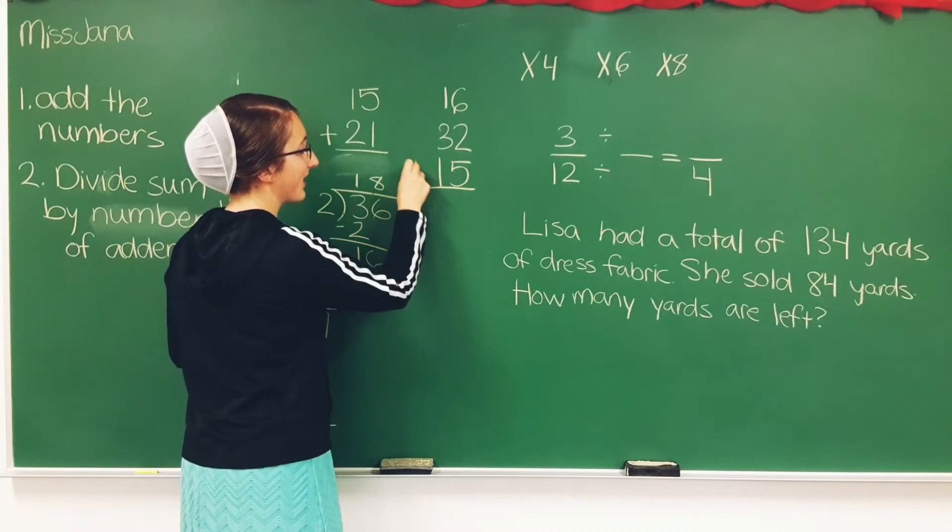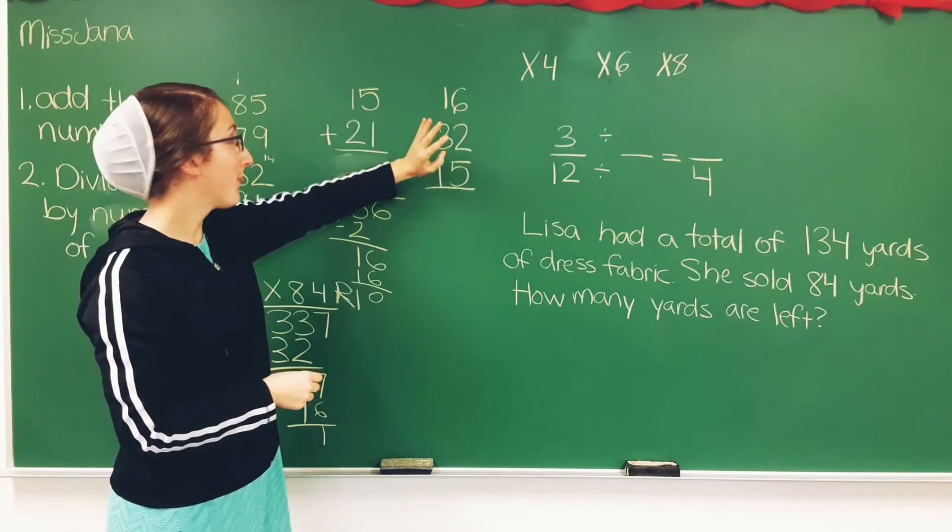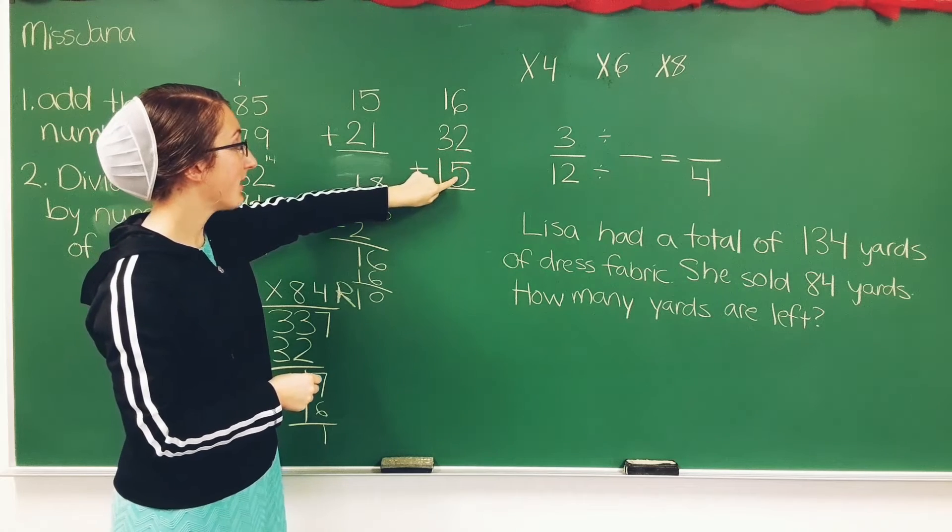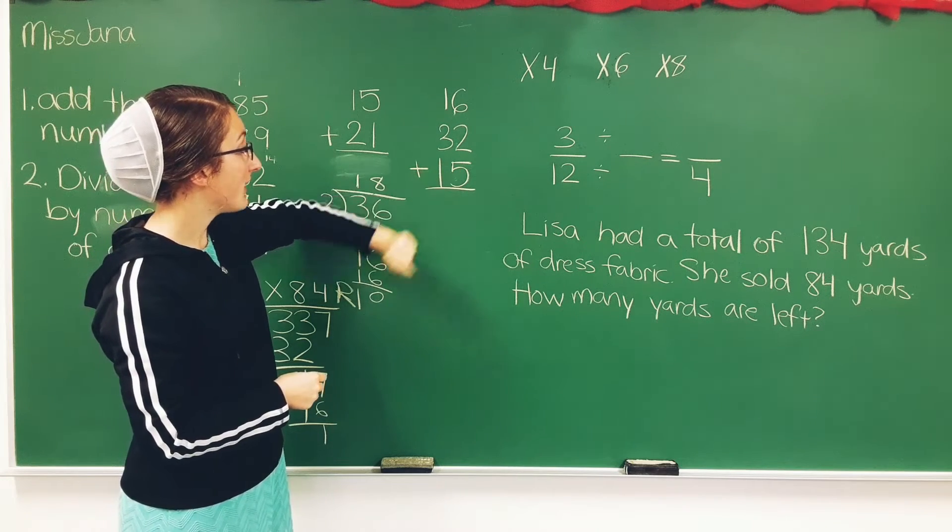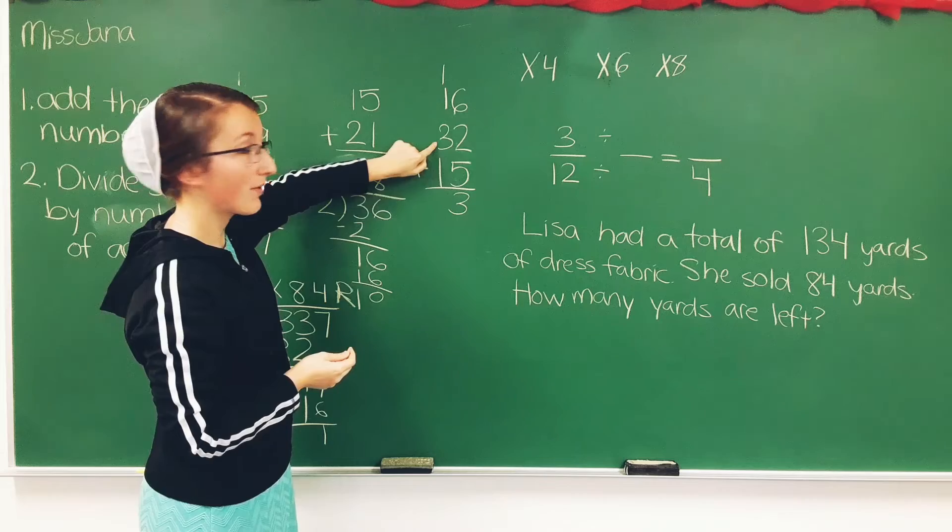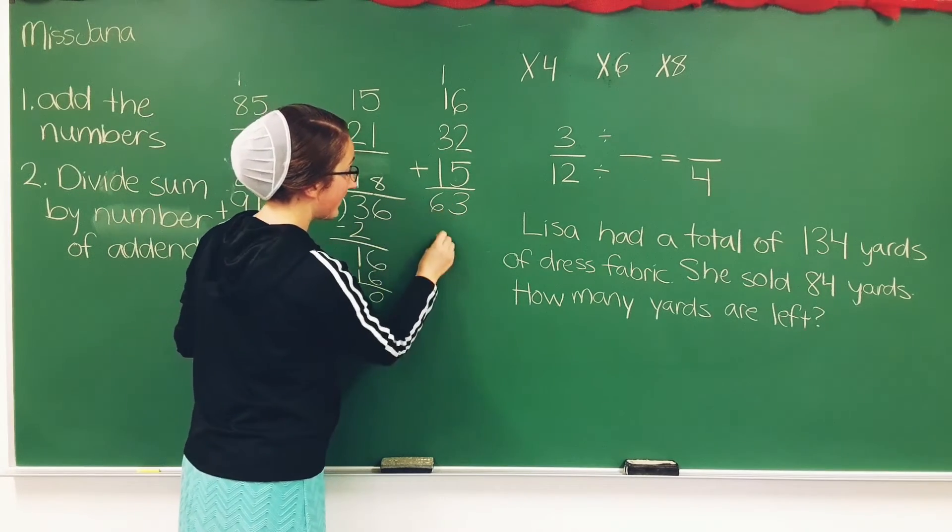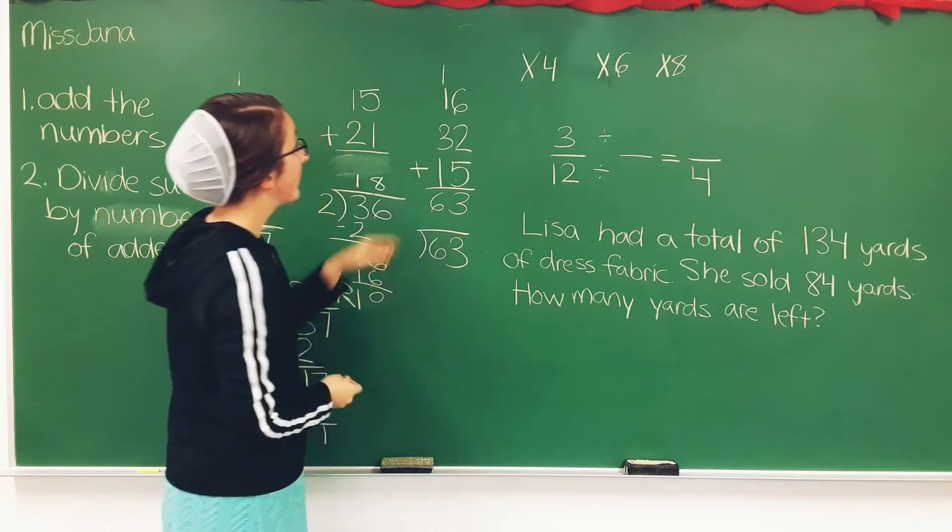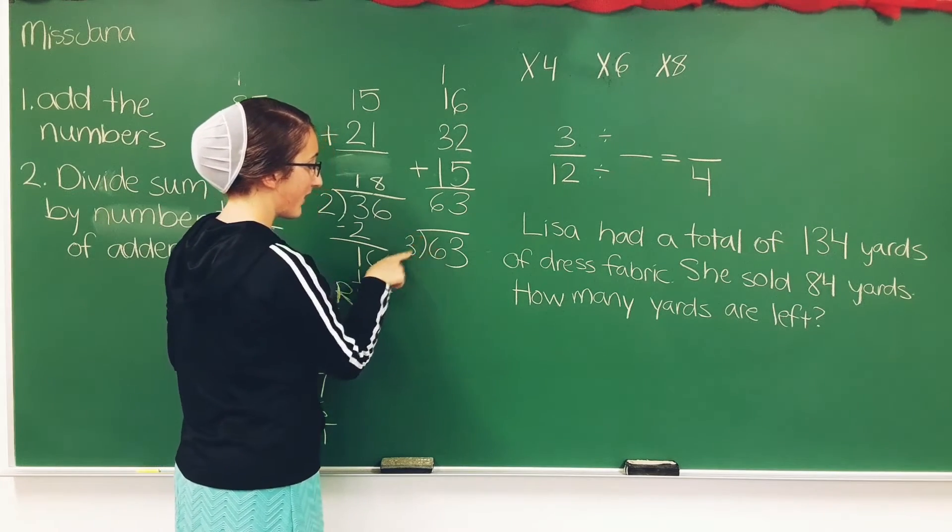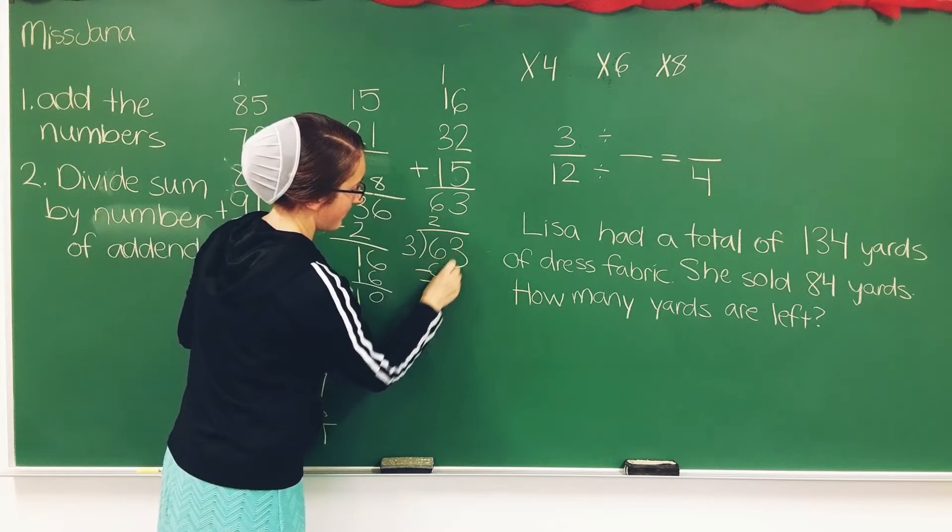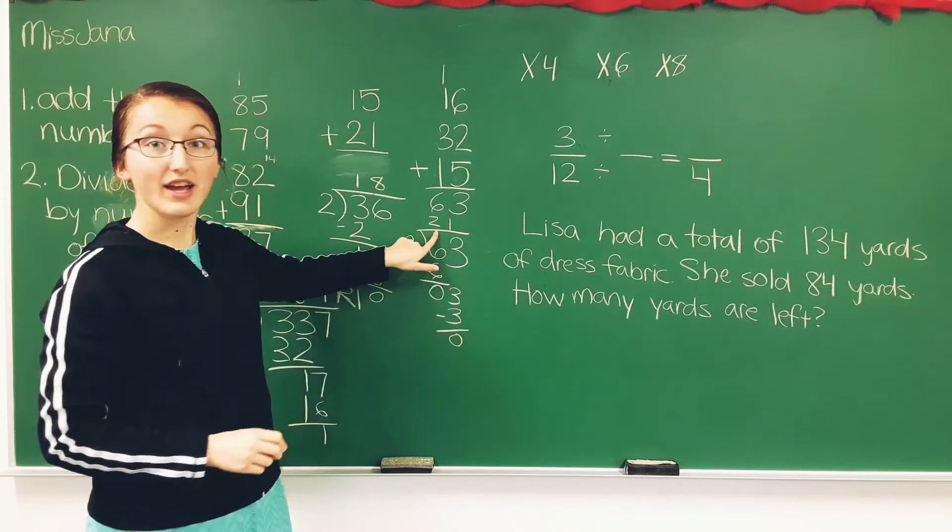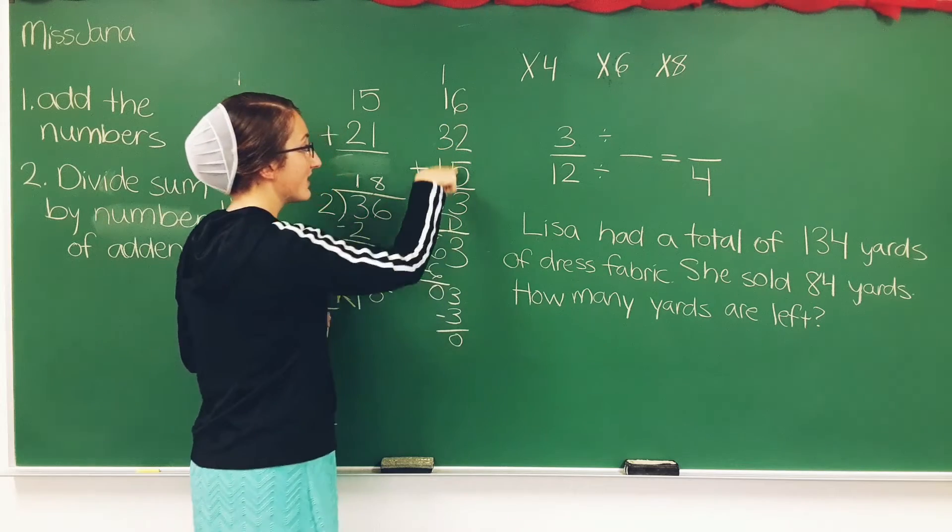Here's another one to work on. We have three addends. Do the right side first. So we have 6, 2, and 5. 6 plus 2 is 8. 8 plus 5 is 13. 2 plus 3 is 5. 5 plus 1 is 6. So we have 63, and we're going to divide it by 3 addends: 16, 32, 15. 6 divided by 3 is 2. 2 times 3 is 6. Bring it down to 3. 3 divided by 3 is 1. So 21 is the average of these three numbers.